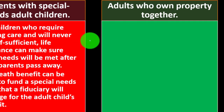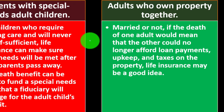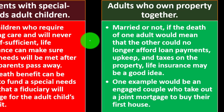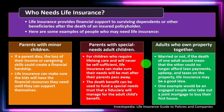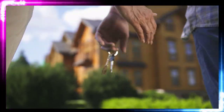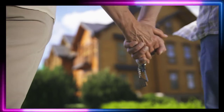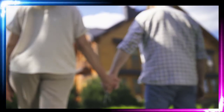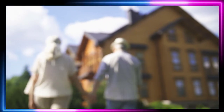Adults who own property together — married or not — if the death of one adult would mean the other could no longer afford loan payments, upkeep, and taxes on the property, life insurance might be a good idea. One example would be an engaged couple who take out a joint mortgage to buy their first house, where the home might be more dependent on one person's salary.